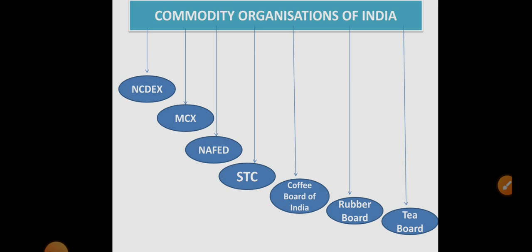Next is STC — State Trading Corporation — which runs totally under the state government. It handles both import and export dealings including manufactured goods, minerals, metals, and agricultural products — managing them based on domestic demand. Coming back to the comparison: NAFED was a cooperative organization involving government and private, but in the case of STC, it is totally under the control of the state government, which is why it is called the State Trading Corporation.